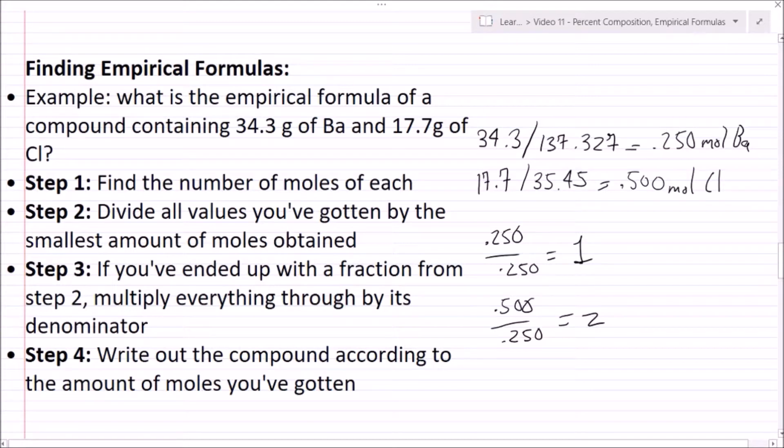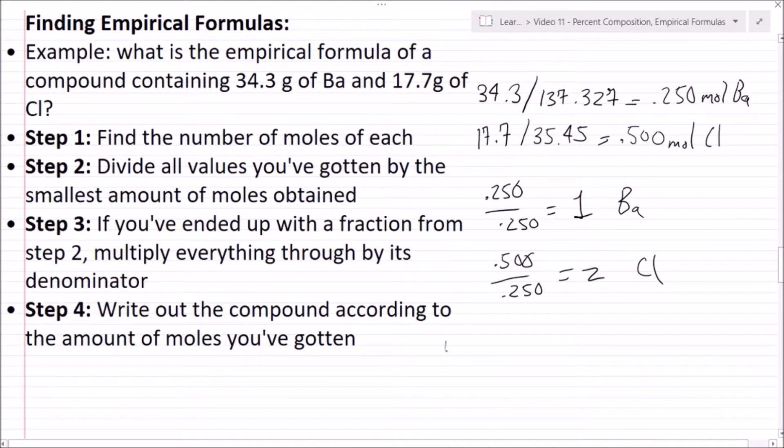And now step 3 is only if you end up with a fraction from one of these numbers, you're just going to multiply through by the denominator so that you end up with whole numbers. And now step 4 is we're going to write out our compound according to the amount of moles I've gotten. So if you remember that here, I can just simply write BaCl2. And so that's how you find an empirical formula.